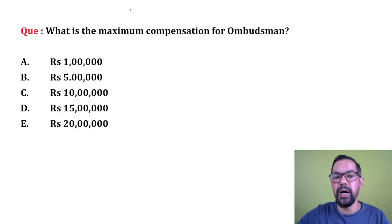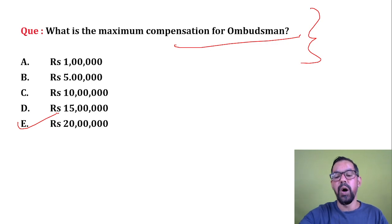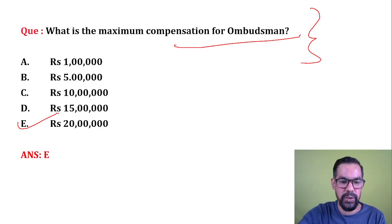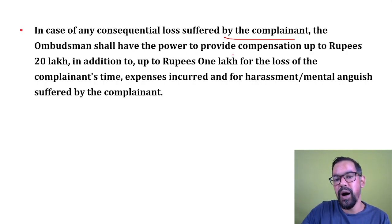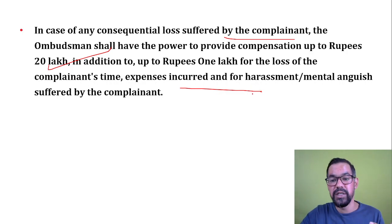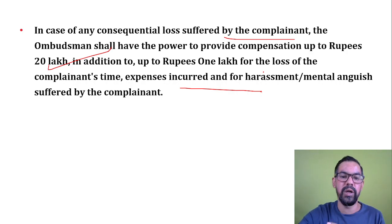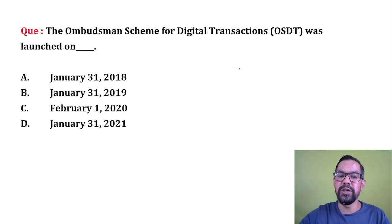Next question: What is the maximum compensation under the Banking Ombudsman? The correct answer is 20 lakh rupees — option E. In case of any consequential losses suffered by the complainant, the ombudsman has the power to provide compensation up to 20 lakh rupees. This maximum limit covers overall losses, expenses, harassment, and mental distress incurred by the customer while fighting the case.